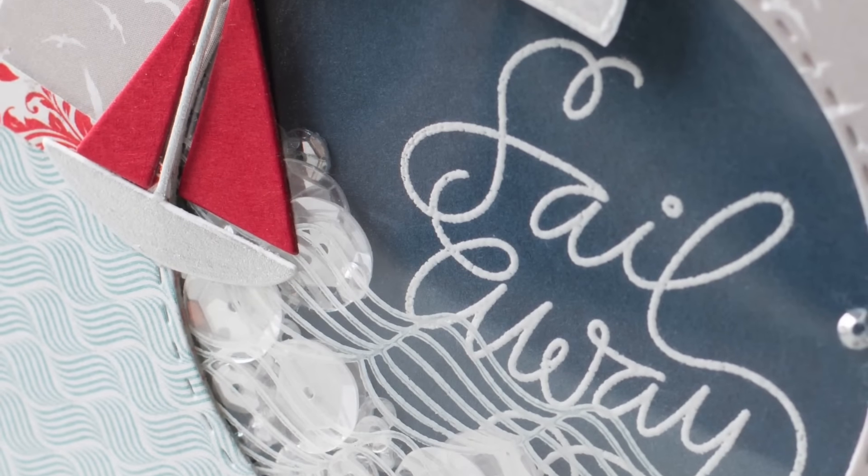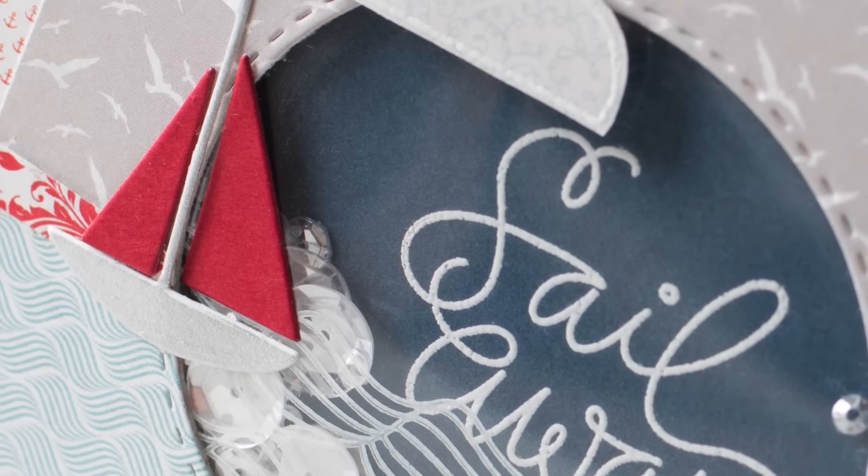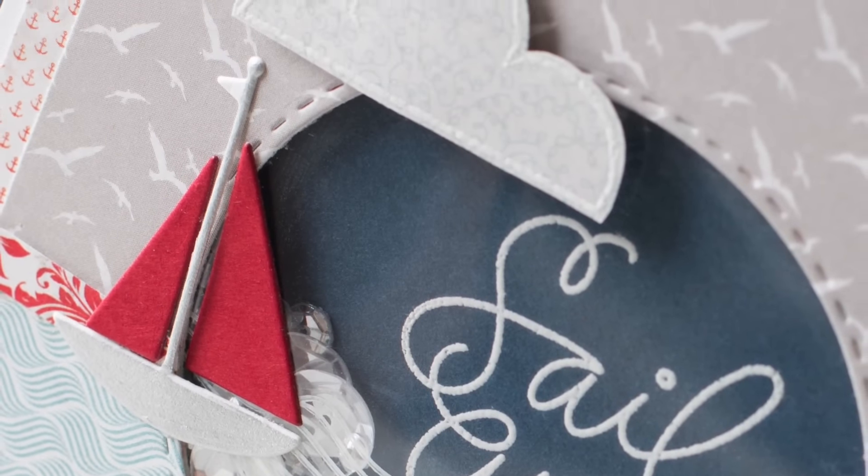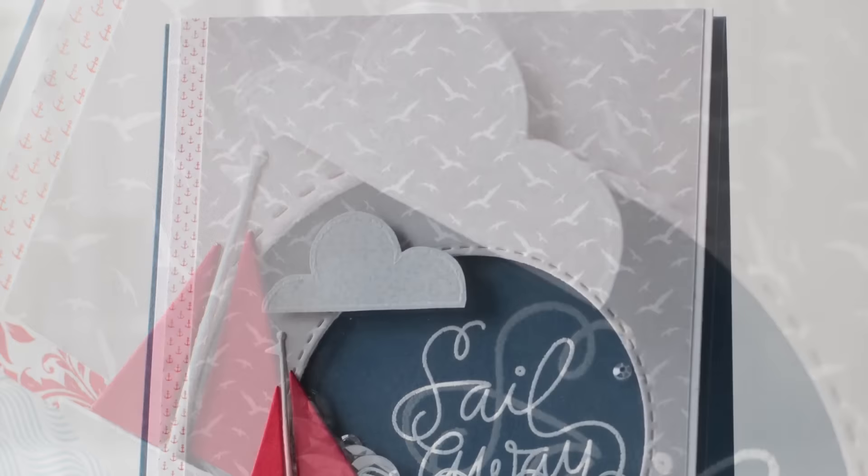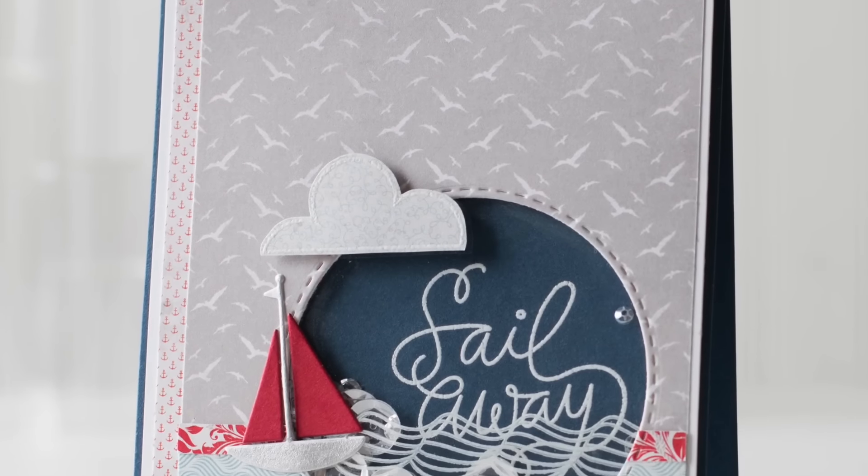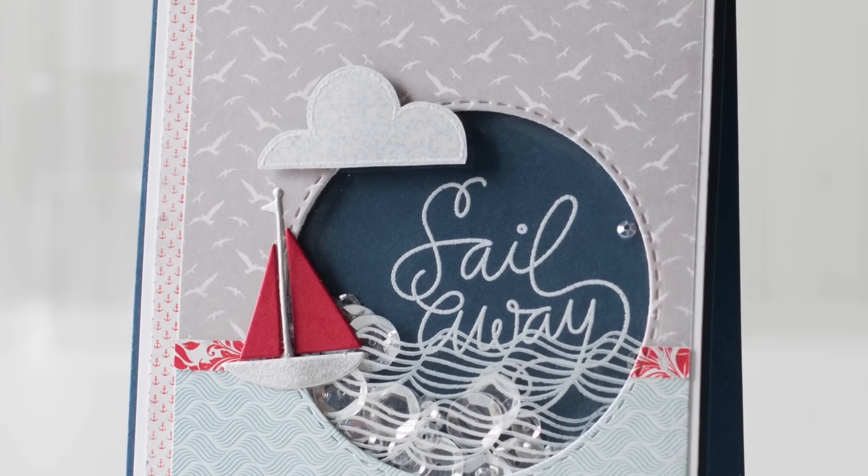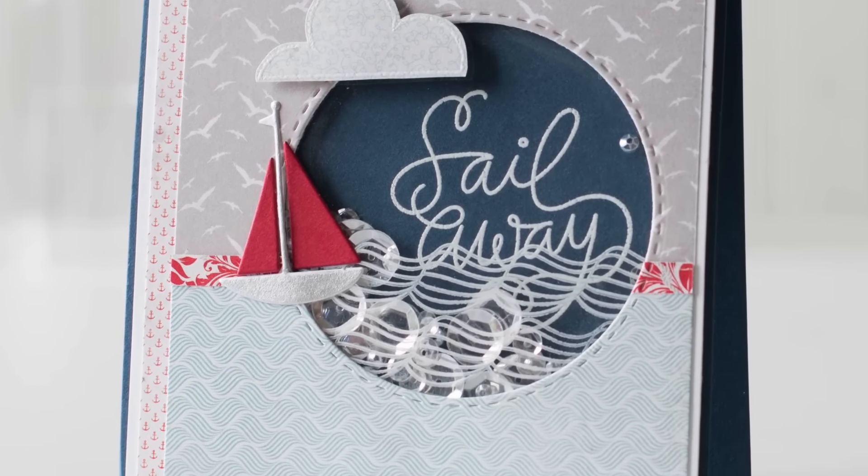To finish off my card I cut the sailboat from white and red cardstock and then I colored the portion of the sailboat with the silver pen. I also white embossed a little cloud with some of the pattern paper and added that to the top of the circle.